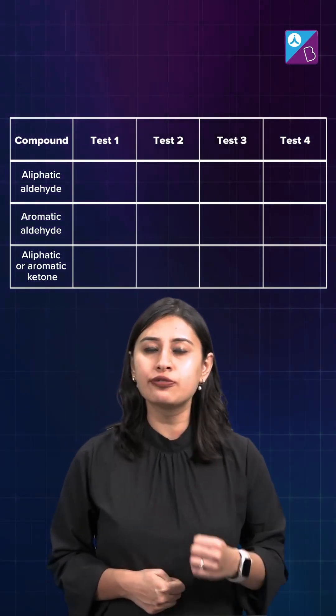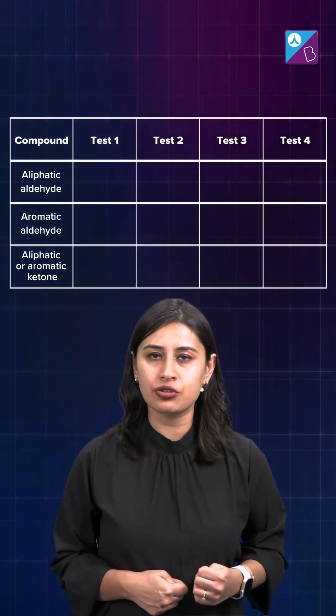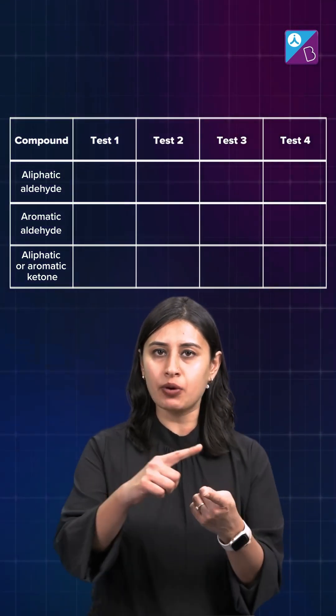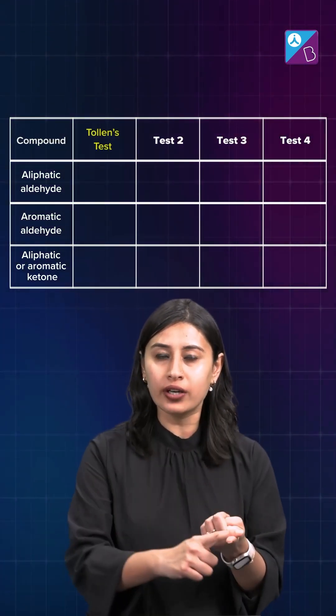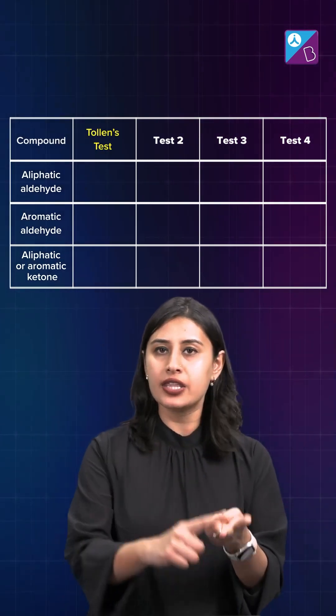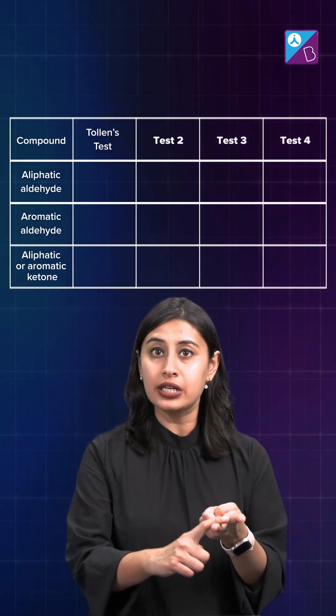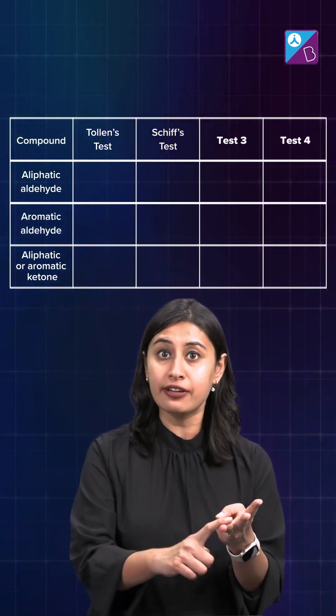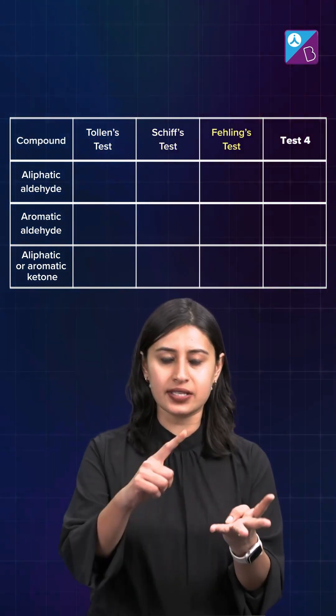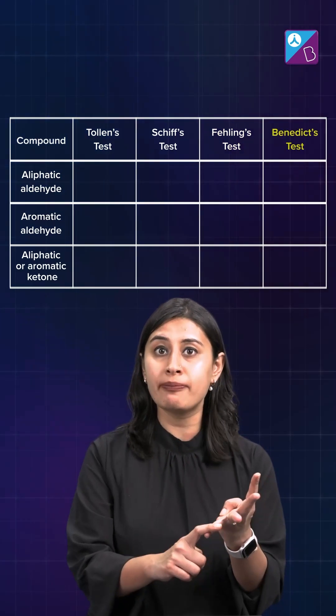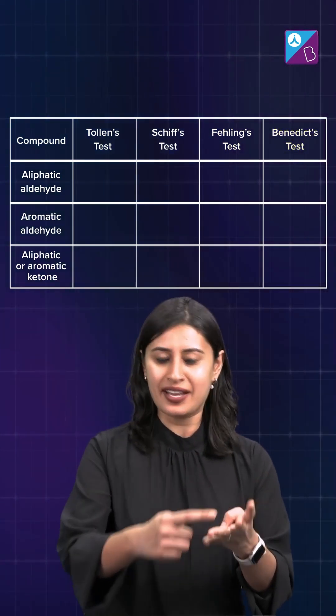You may use four oxidation reactions. Number one, Tollens' test. Number two, Schiff's test. Number three, Fehling's test. Number four, Benedict's test.